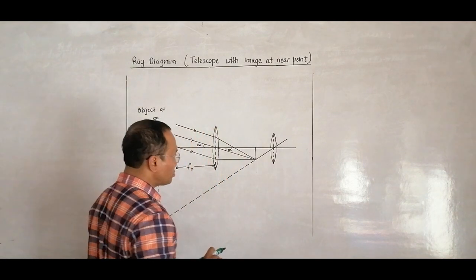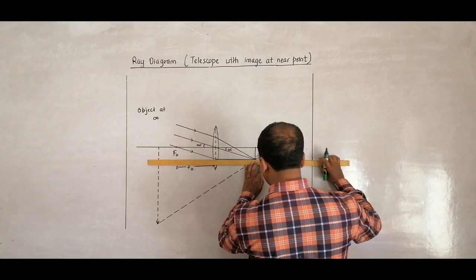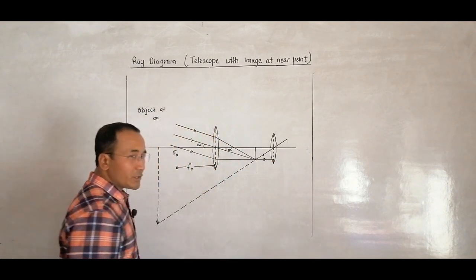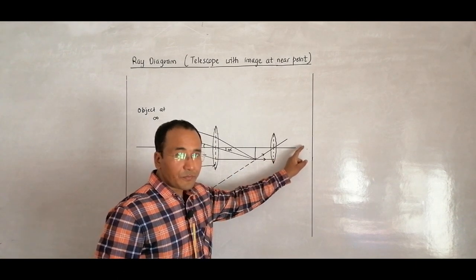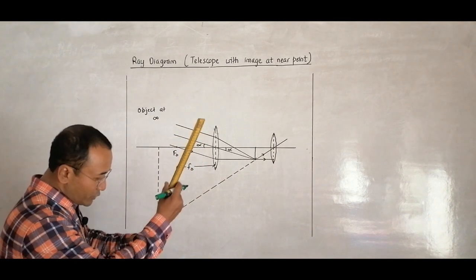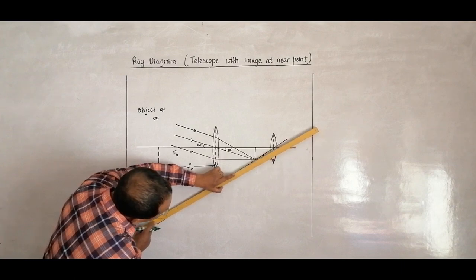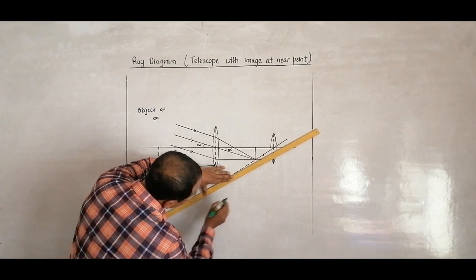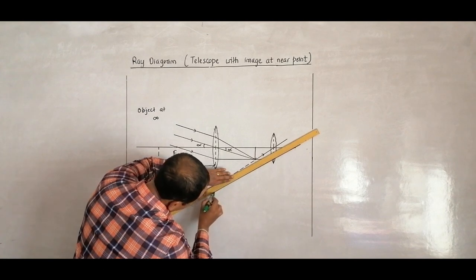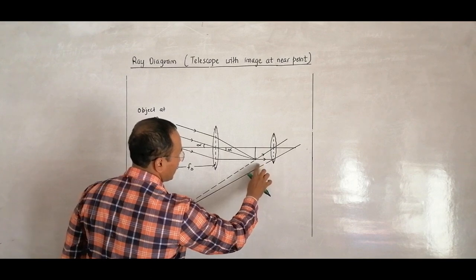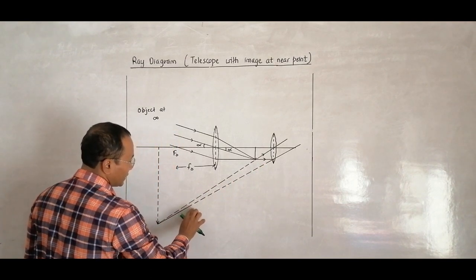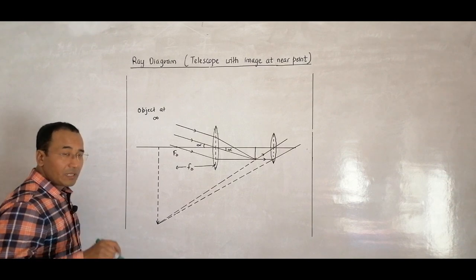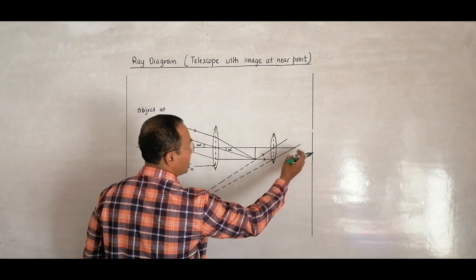This is the eyepiece lens. A light ray from here goes parallel to the axis. This ray, after passing through the lens, goes through the focus. When it is back traced, it meets the virtual image. So what I do is: I start from the image. I started from the image, so this ray does not go beyond the line that I have drawn.